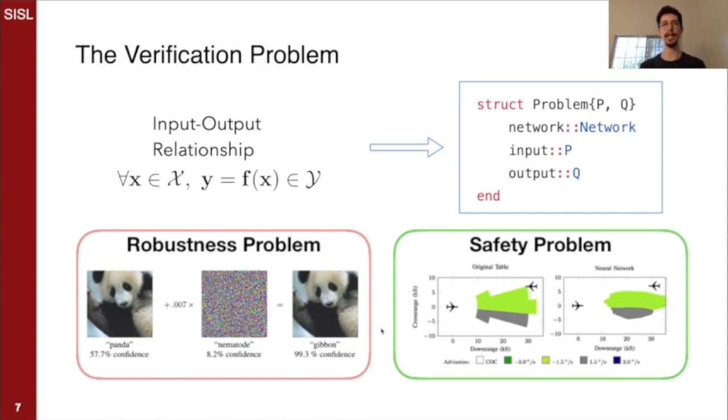We can also imagine this in the context of a safety critical system, for example, maneuvering an airplane. We'd like certain nonsensical outputs to be impossible in given situations. For example, here where the intruder is on the left, we would like to be able to prove formally that the network will never output the direction left, the plane to turn left. We can imagine that if it was possible for it to do that, that could be disastrous.